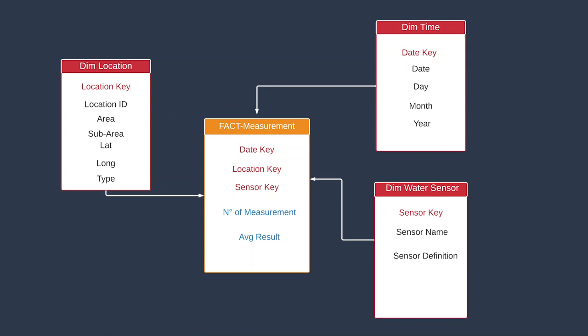For the dimension water sensor, we have the sensor key as a surrogate key for the data warehouse, we have a sensor name and sensor definition. The sensor name is going to play the role of the reference key for updating the dimension.